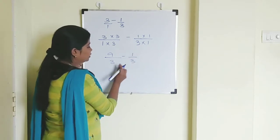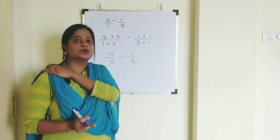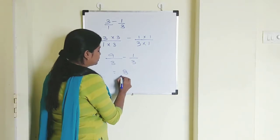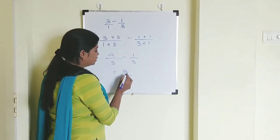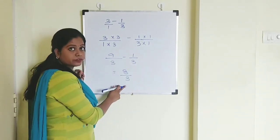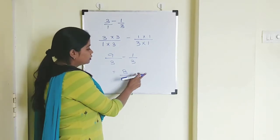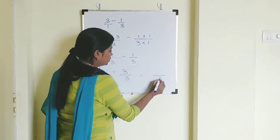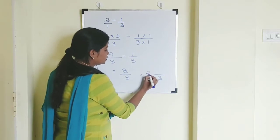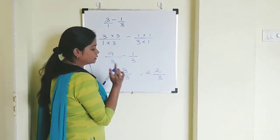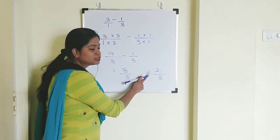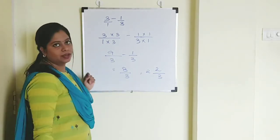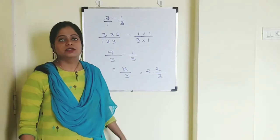So 3 threes are 9, giving us 9 upon 3 minus 1 upon 3. Now the denominators are the same, so we subtract: 9 minus 1 is 8 by 3. This is an improper fraction, so we convert it into a mixed fraction. 3 twos are 6, 6 plus 2 is 8, so the answer is 2 and 2 by 3.